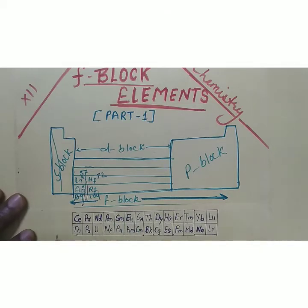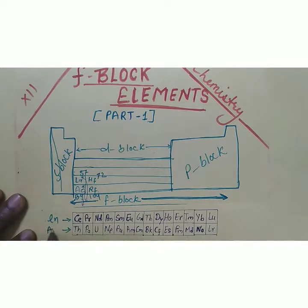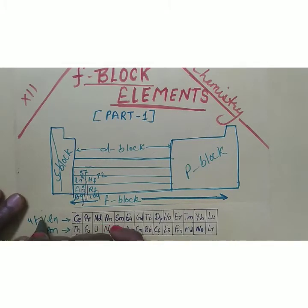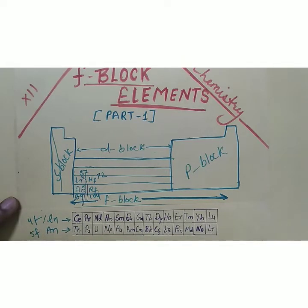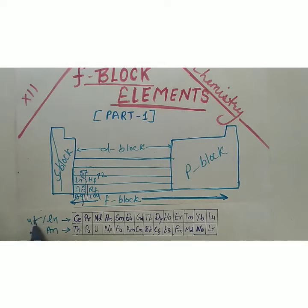There are two series of F block elements. This is known as the lanthanide series and this is known as the actinide series. This is also known as the 4F series and this is known as the 5F series. In the 4F series, electrons will enter in 4F orbital; in the 5F series the electron will enter in 5F orbital.